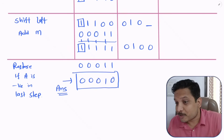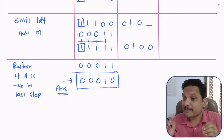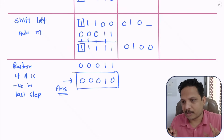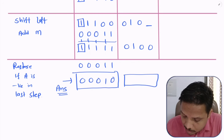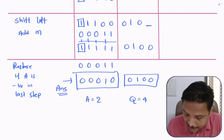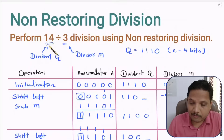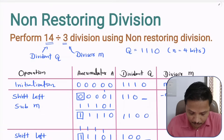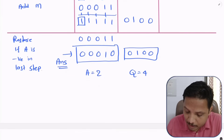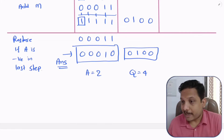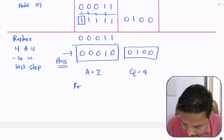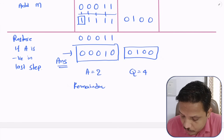In non-restoring division, in the last step it is essential that if the sign is negative you perform the restore operation. But for all other steps you do not need to do restore. After restoration, the final accumulator value gives the remainder = 2, and the quotient Q = 0100 = 4. So 14 divided by 3 gives quotient 4 and remainder 2, which is correct.